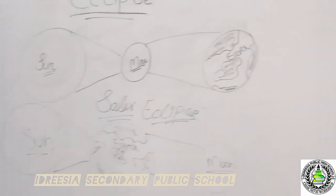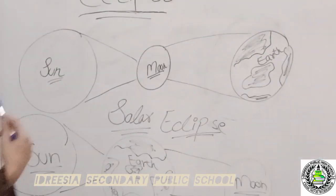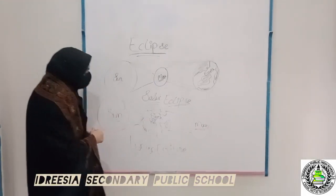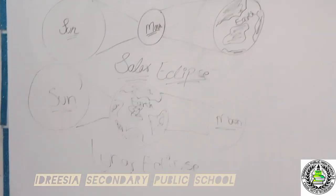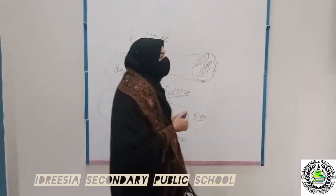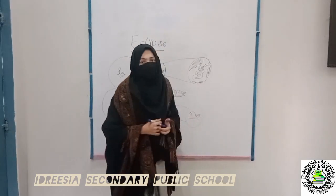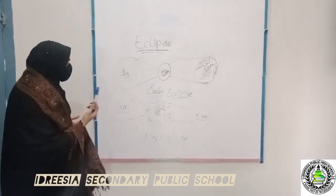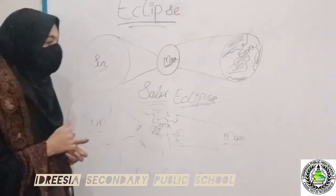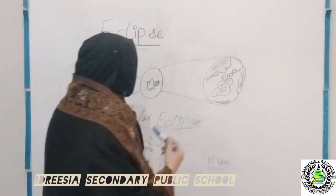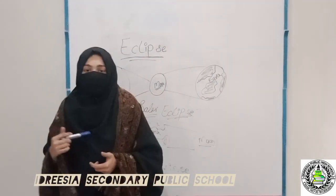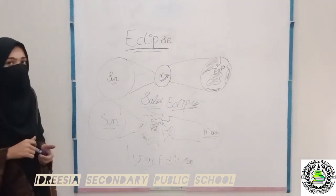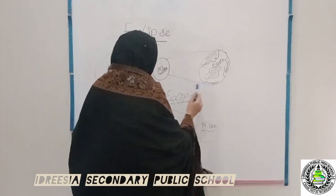There are two types of Eclipse: Solar Eclipse and Lunar Eclipse. Solar Eclipse occurs when the moon comes between the sun and the earth. The shadow of the sun rays is covered by the moon, and the shadow comes on the earth.